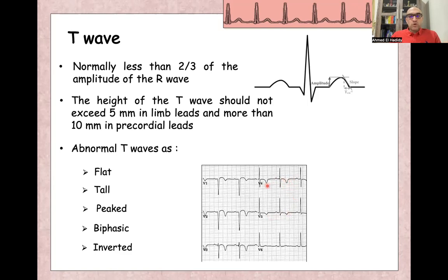So flat, tall, peaked, biphasic, and inverted. This is example of abnormality in T waves.